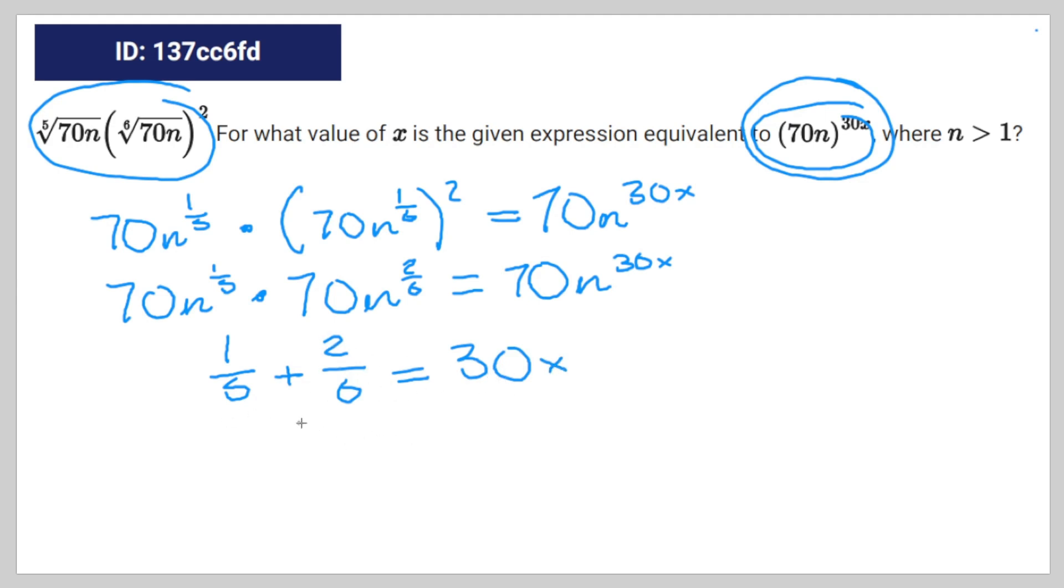And that means that 30x is going to equal 16 over 30, which is equal to 30x again. Divide both sides by 30, you're going to get x is equal to 16 divided by 900, which is the correct answer.